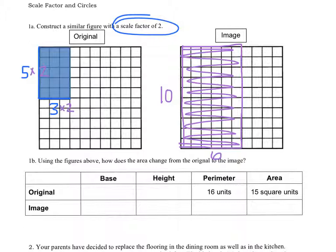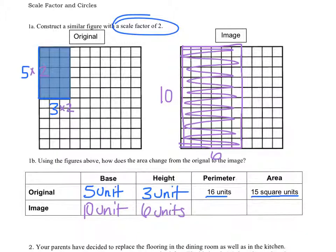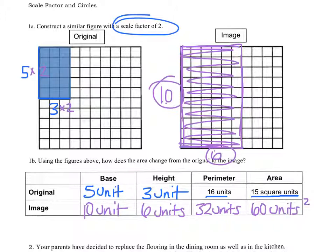On the bottom it says use the figures above to find the base, height, perimeter, and area. We have a 5 unit by 3 unit rectangle, which gives a perimeter of 16 and area of 15 square units. Our scaled image has a base of 10 units and 6 units. The perimeter is 10 plus 6 plus 10 plus 6 for a grand total of 32 units. And area, 10 times 6, length times width, which gives us 60 units squared. Notice we did label everything, so on your summative, I would label also.